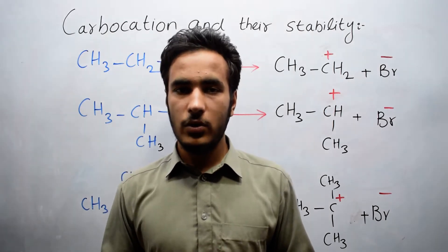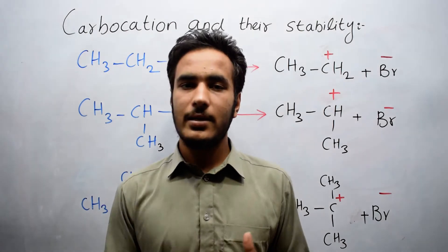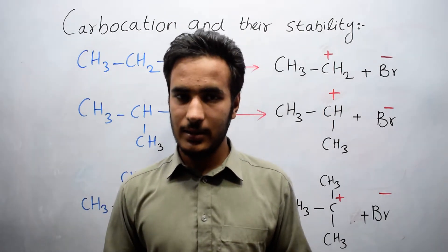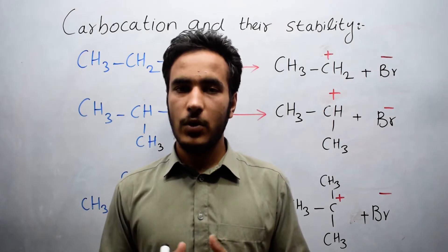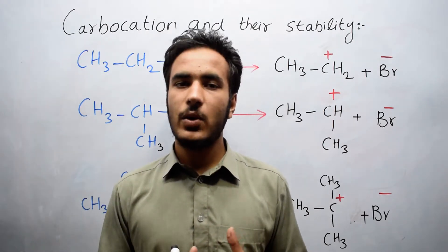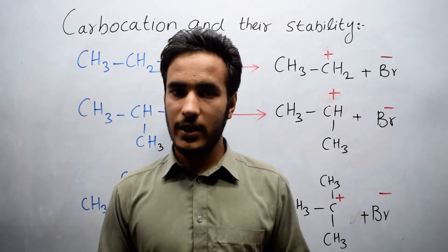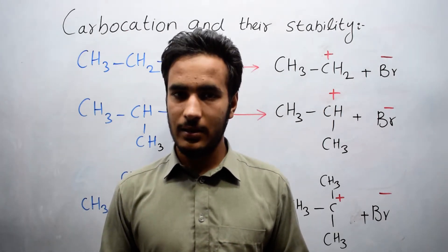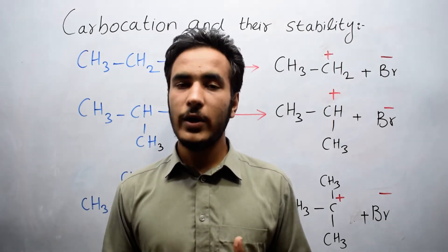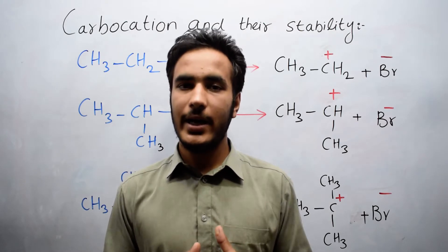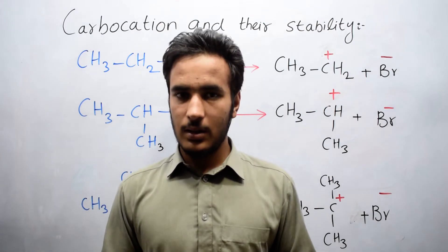In this video we will be talking about carbocations and their stability. The carbocation is linked with alkyl halides. If we remove the halogen from an alkyl halide, a positive ion is produced, and that positive ion is known as a carbocation or carbonium ion — the ion in which carbon carries a positive charge.